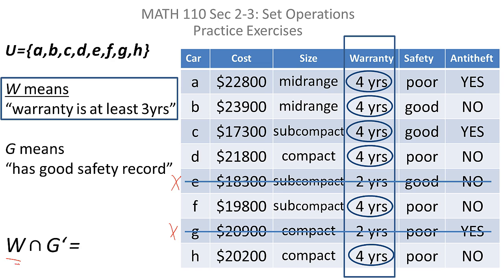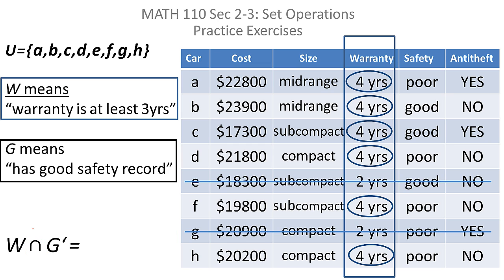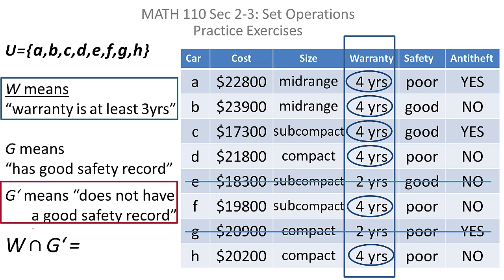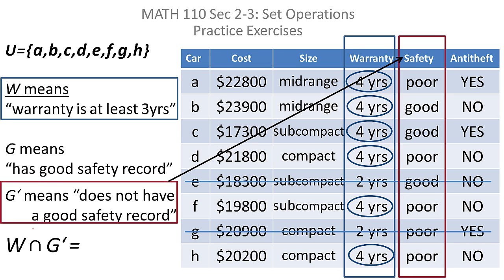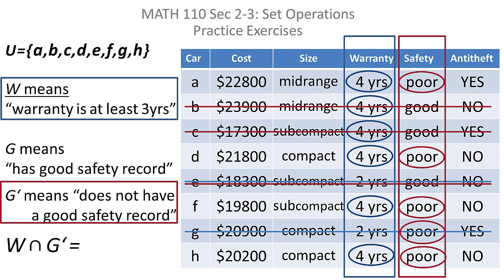But remember we're doing W intersected with G complement, not G. So what is G complement? G means it has a good safety record, so G complement means it does not have a good safety record. Going back to the table, I look at the safety column and eliminate every car that does have a good safety record, keeping the ones that do not. So I mark off B, C, and E because they have good safety records.